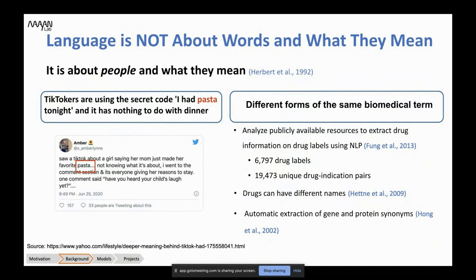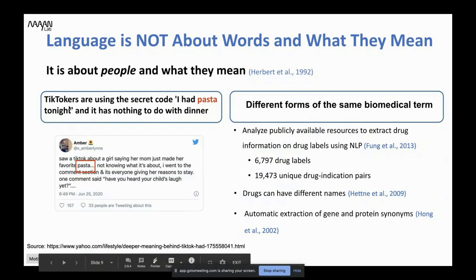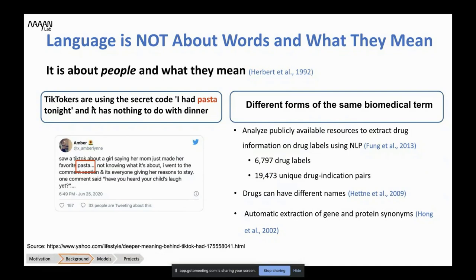Language is not just about words and what they mean — that's a common mistake. It's about people and what we mean when we say different words in different contexts. A very recent example: TikTokers are using the secret code 'I had pasta tonight' — but they use it to tell the world they're going to commit suicide.